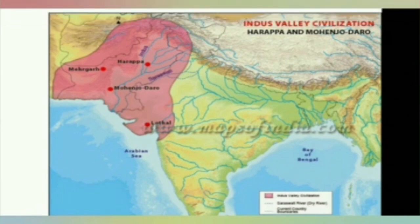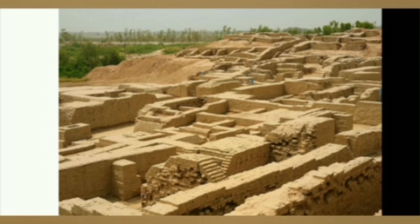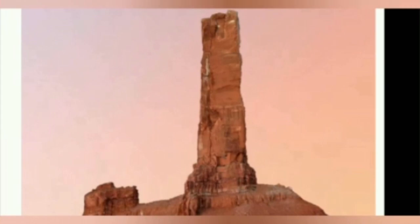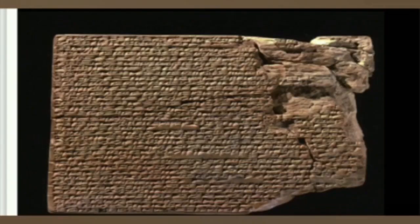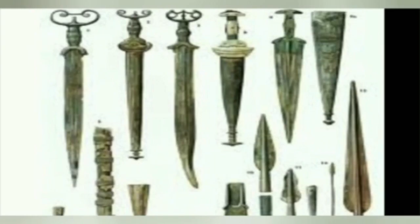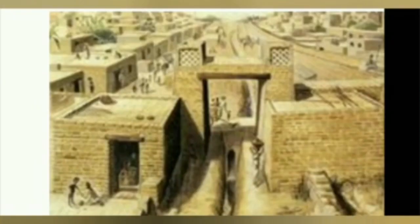Historians use different types of sources to learn about the past. The sources they choose depend upon the period of their study and the nature of their investigation. We get evidences from plates of copper, dry palm leaves, rocks and pillars, stone walls, clay tablets, tools and weapons, etc., which our ancestors have left behind.